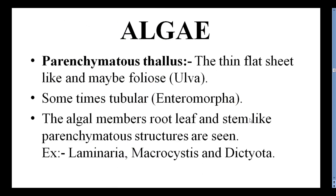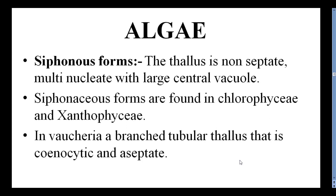Some forms have Parenchymatous Thallus — thin, flat, sheet-like, and sometimes foliose. This is seen in Ulva. Sometimes there is a tubular Thallus, as seen in Enteromorpha. Root, leaf, and stem-like parenchymatous structures are seen in Laminaria, Macrocystis, and Dictyota. Siphonous Forms have a non-septate, multi-nucleate thallus with a large central vacuole. These are found in Chlorophyceae and Xanthophyceae. Example: Vaucheria — a branched tubular thallus with coenocytic and aseptate condition.